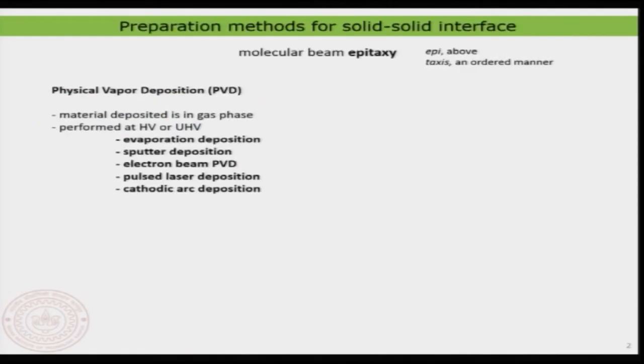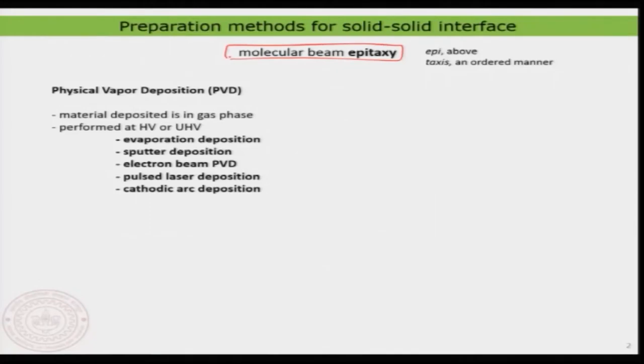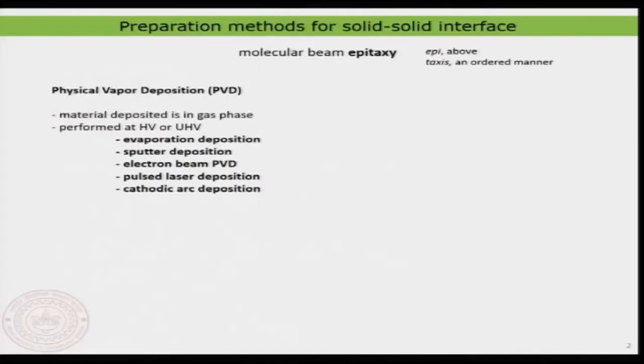Let us look at the preparation. In general, when you prepare a molecular or an ad layer of any material — be it a molecule, atom, or whatsoever — on top of another crystalline surface, that methodology is known as molecular beam epitaxy. Epitaxy means something above something in an ordered manner, so it represents forming an ordered layer. Ideally, what we are making is a solid-solid interface, both crystalline, and that process is known as an epitaxy process.